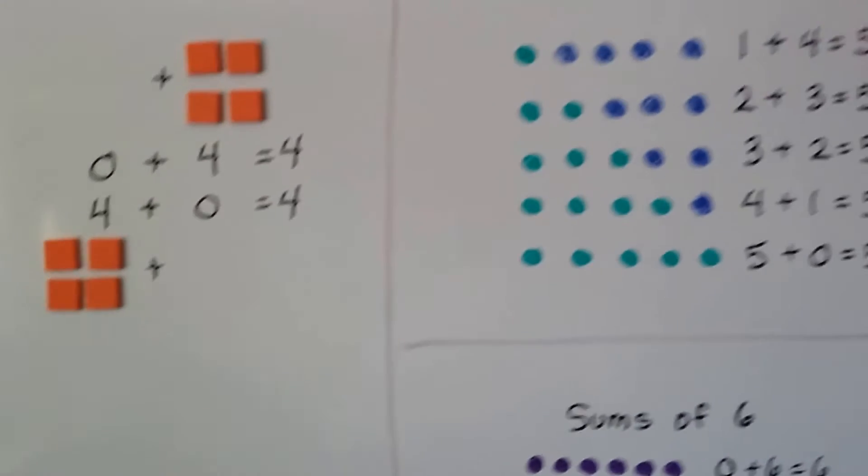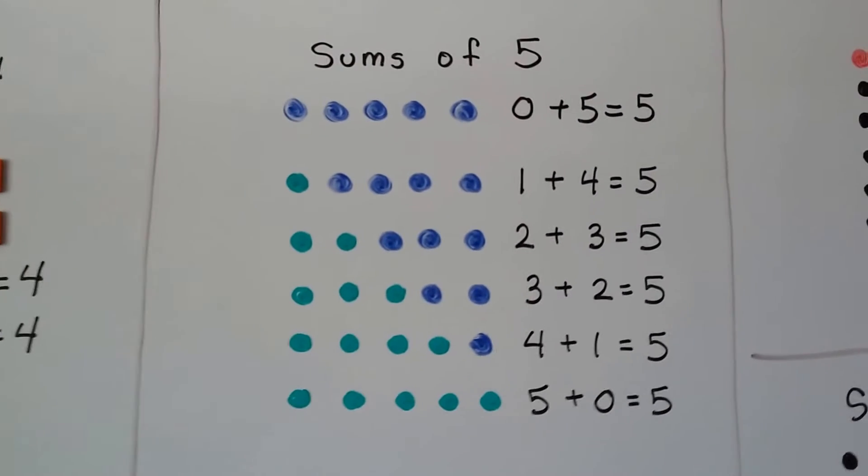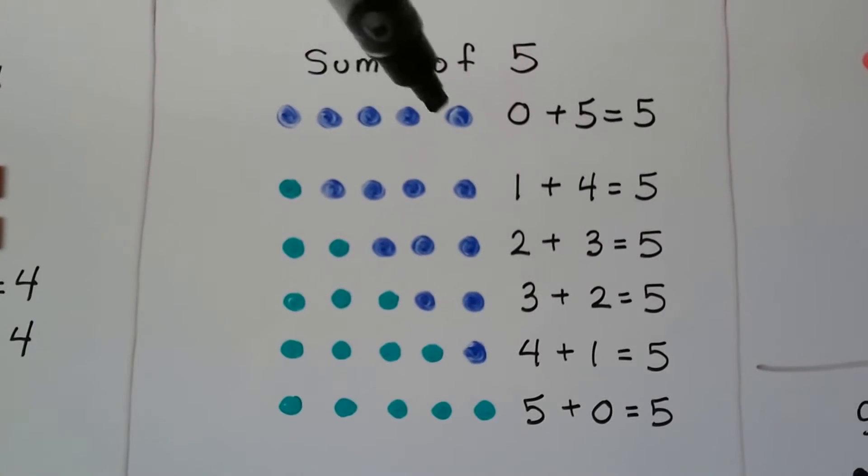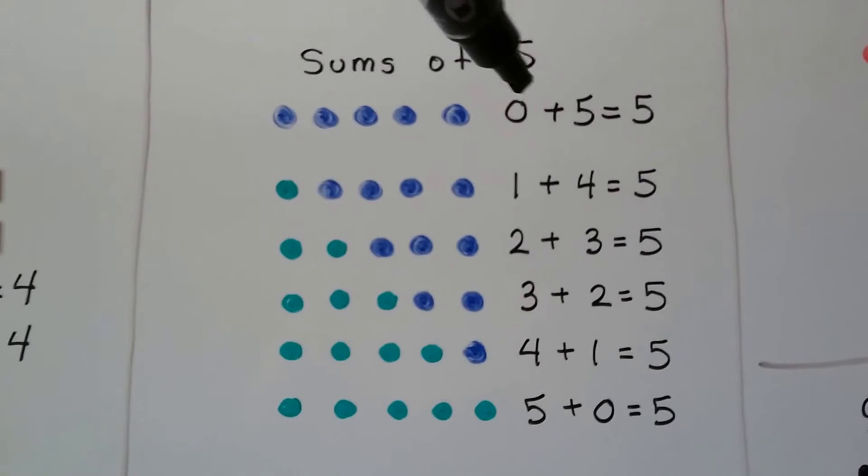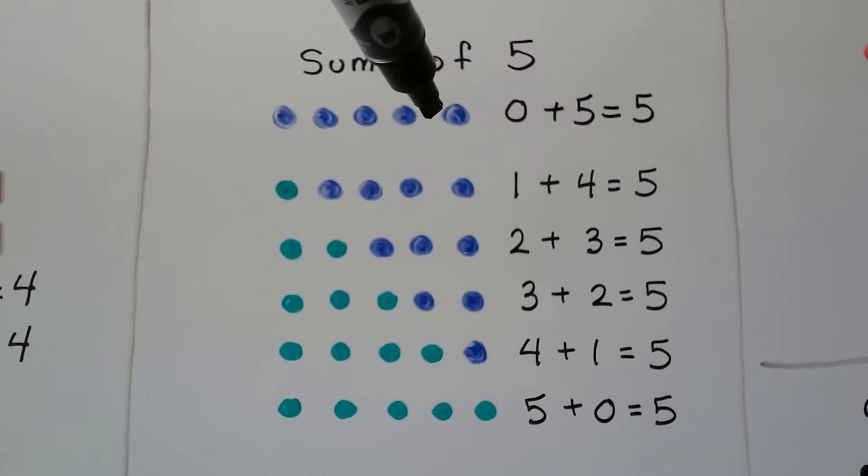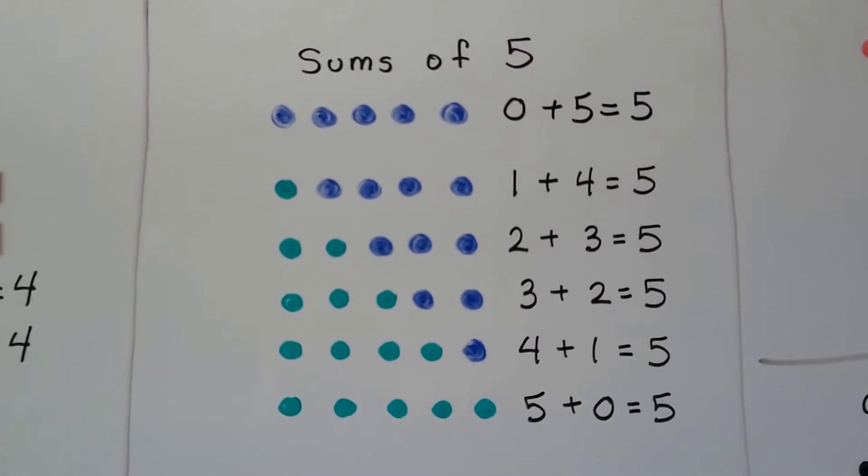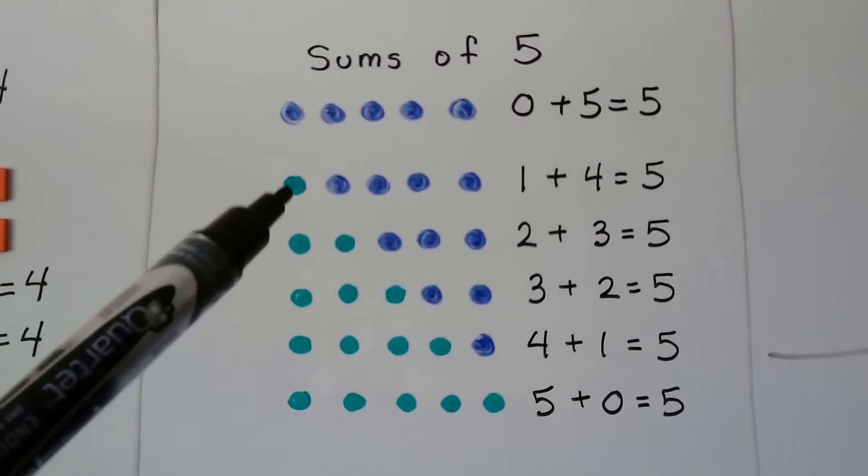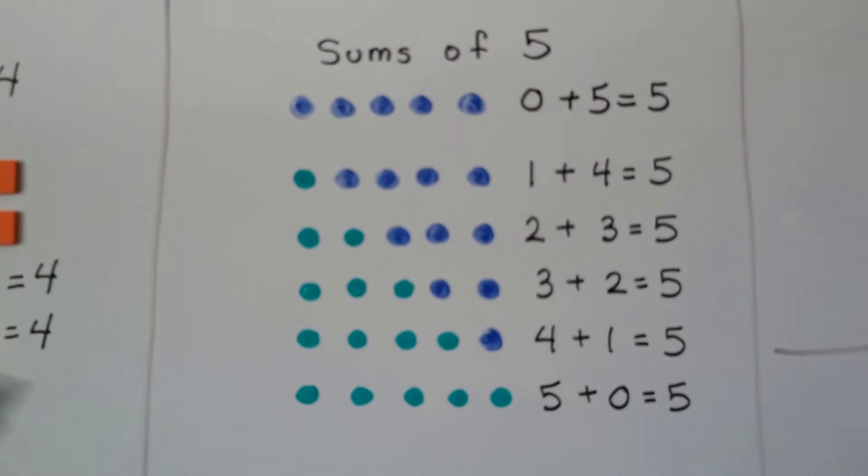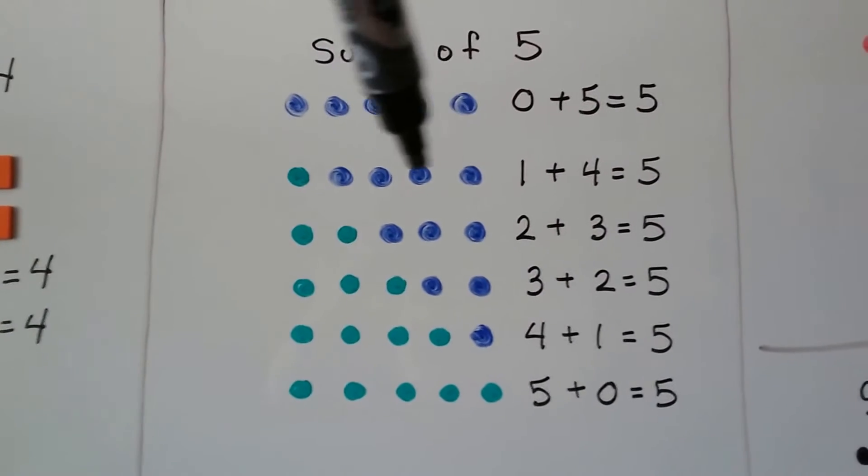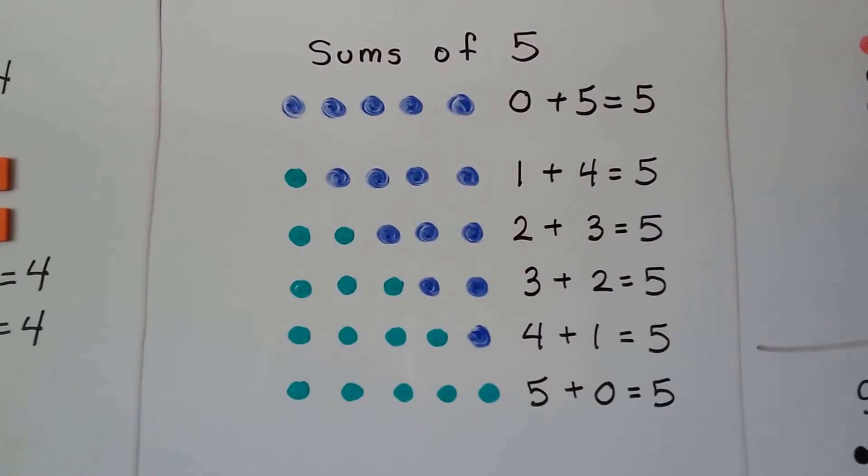So here's some patterns for the sums of five. We have no green dots, so that's a zero. And we have five blue dots. Zero plus five is five. We have one green dot plus four blue dots. We have five dots.